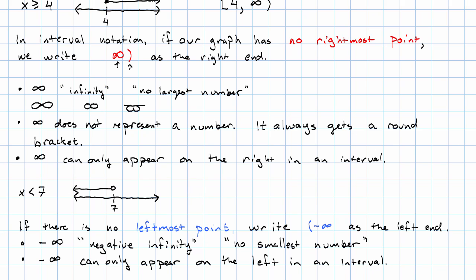So, in this example, we have negative infinity, 7. 7 has an open dot, so it gets a round bracket.